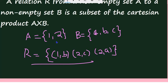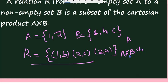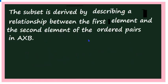Here A has 2 elements and B has 3 elements, so A×B has 6 elements. How many subsets can be written for A×B? 2⁶ subsets can be written, and each subset is a relation. This is the definition of a relation. The subset is derived by describing a relationship between the first and second elements of the ordered pairs.